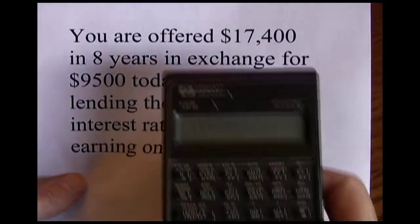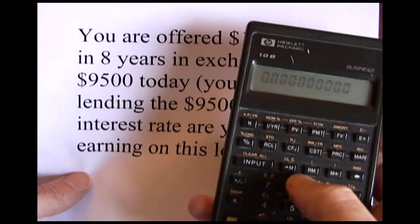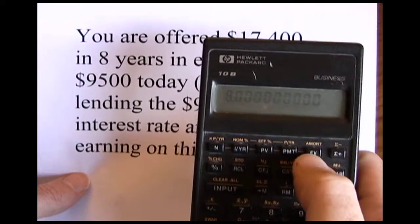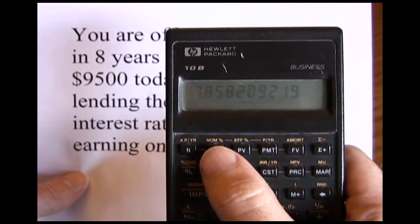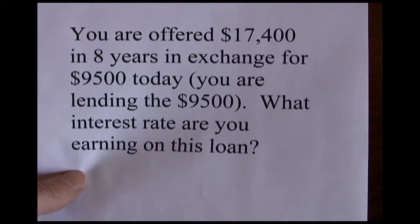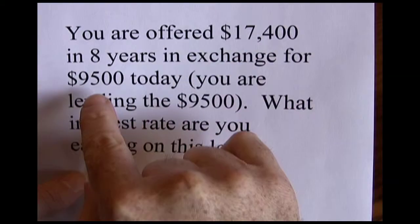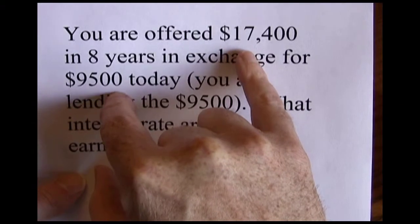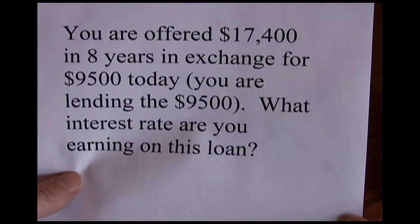We have no annuity here, so we can zero out the payment. The timeline is eight years, so eight is our N. Now we've plugged in a value for N, PV, PMT, and FV — the only one we don't have is the interest. Solve for that and we find out that we're getting a 7.86% rate of return on this loan. Be careful: you have to give up $9,500 today to get $17,400 in the future, so PV must be negative and FV positive. If you put both in as positive, the calculator will give an error because it can't find a solution that allows you to receive both cash flows — you have to give one up to get the other.